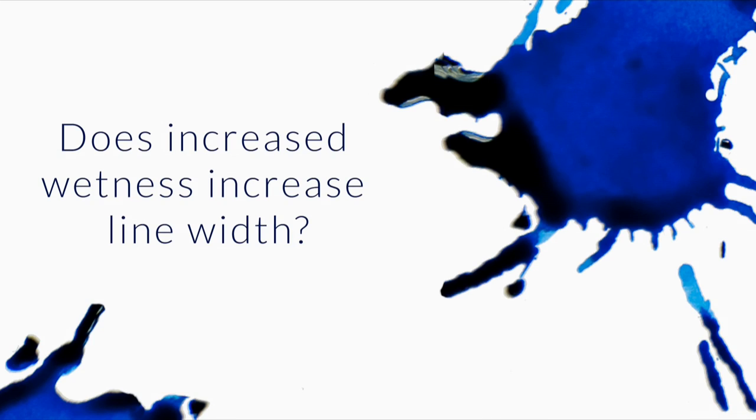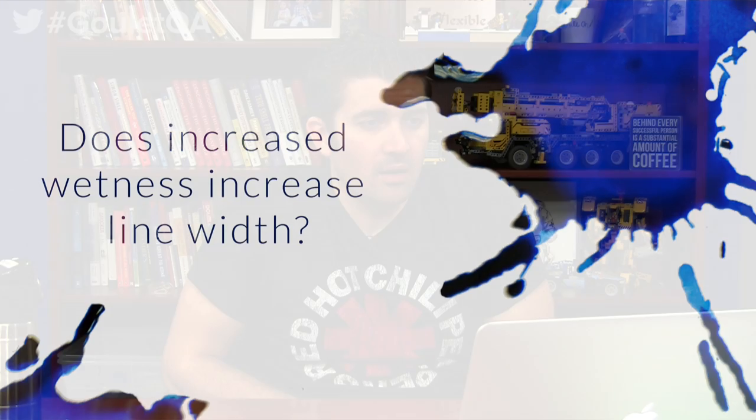Does increased wetness increase line width? I know it will on cheap paper, but what about on Rhodia? Basically, you're talking about wetness of a pen or an ink — I'll lump them both together because they can both be a factor. Will it increase line width? The short answer is: maybe. With absorbent paper — I'll call it absorbent rather than cheap — more ink coming out means it's going to absorb more into the paper.